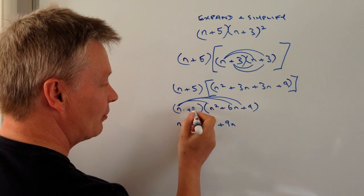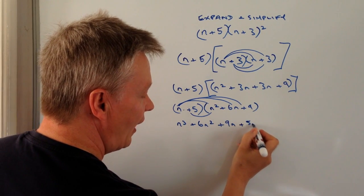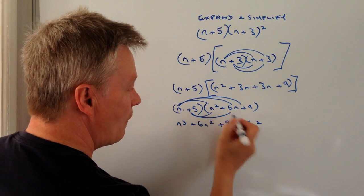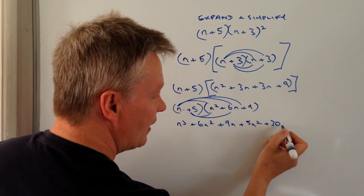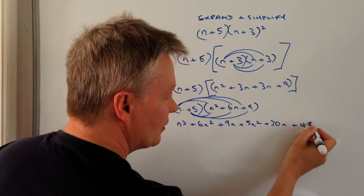I'm going to deal now with a plus 5 and I've got plus 5n squared plus 30n and then finally plus 45.